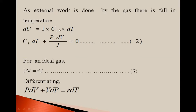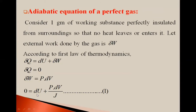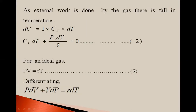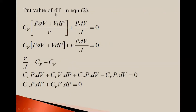The specific heat at constant volume is cv. So: cv dT + P dV / J = 0 — this is equation 2. We put the value of du as cv dT in equation 1. For an ideal gas, PV = RT, where R is the gas constant — this is equation 3. Differentiating equation 3, we get: P dV + V dP = R dT. Now we put the value of dT in equation 2.